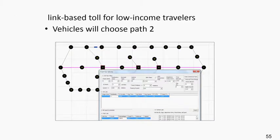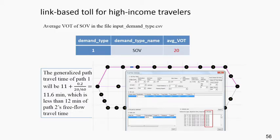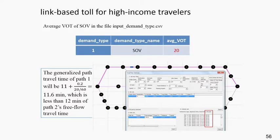In this case, all vehicles will still select path two because they cannot afford the toll at this value of time. If we change the average value of time to 20 dollars per hour, then the generalized path travel time of path one becomes 11.6 minutes — which is less than the 12-minute free flow travel time on path two. In this case, all high-income travelers will stay on path one to avoid traffic congestion or detours and save their average travel time.